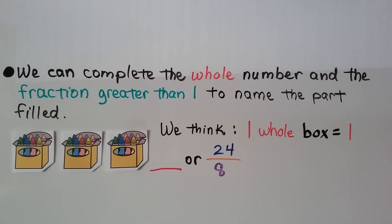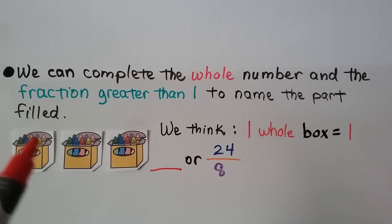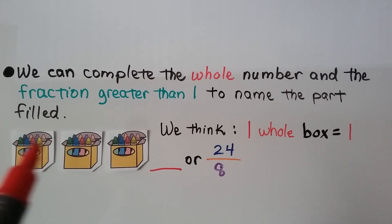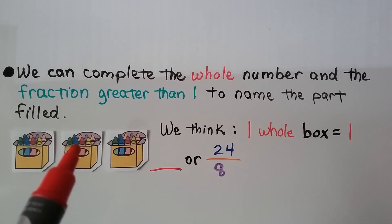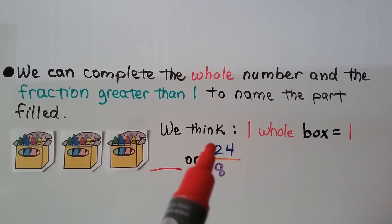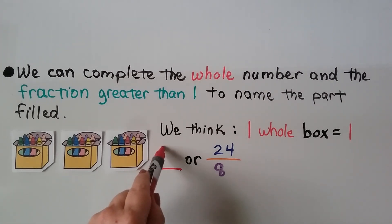We can also complete a whole number and fraction greater than one to name the part filled. We have boxes of crayons with eight crayons in each box. Counting: eight, nine, ten, eleven, twelve, thirteen, fourteen, fifteen, sixteen — two times eight equals sixteen. We have one more eight, that's three times eight. Three eighths are twenty-four. There are eight in each box but twenty-four in all, giving us three whole boxes of crayons.